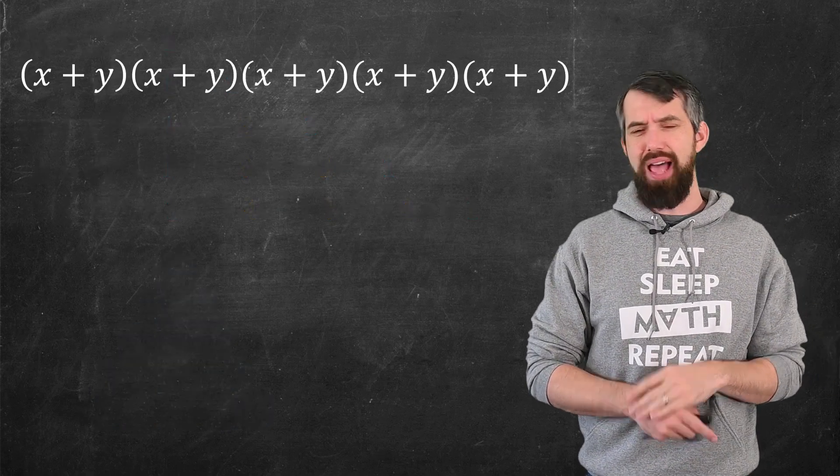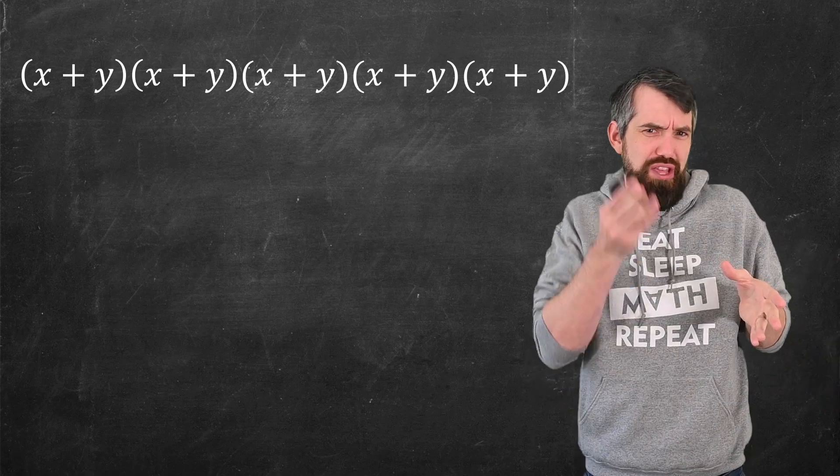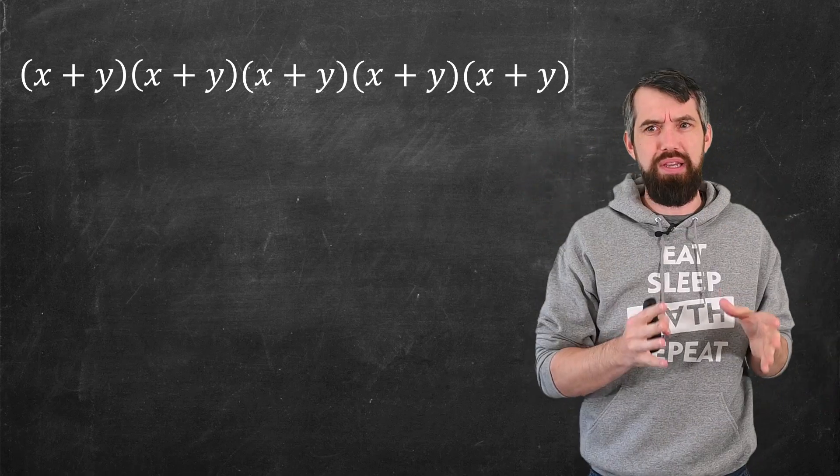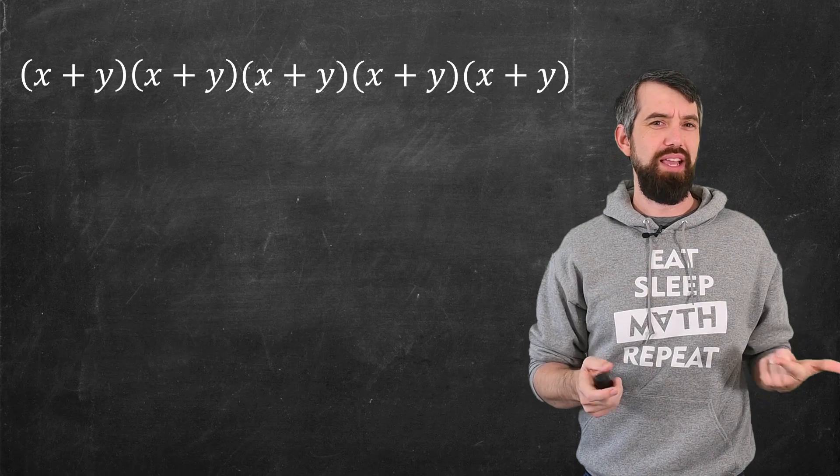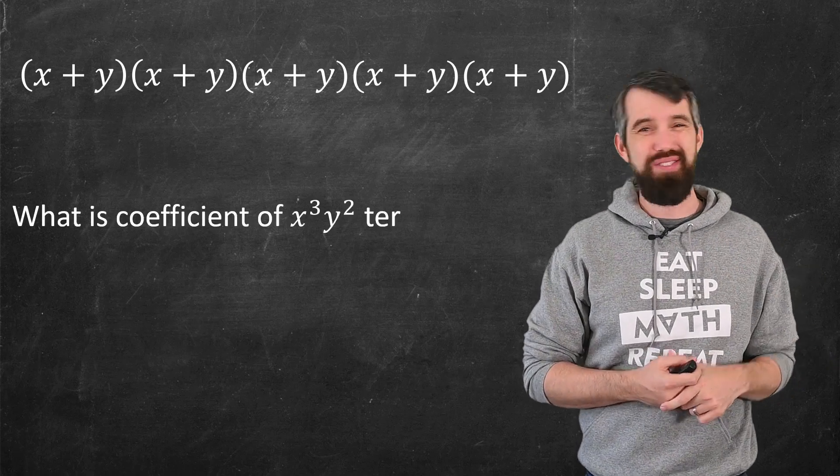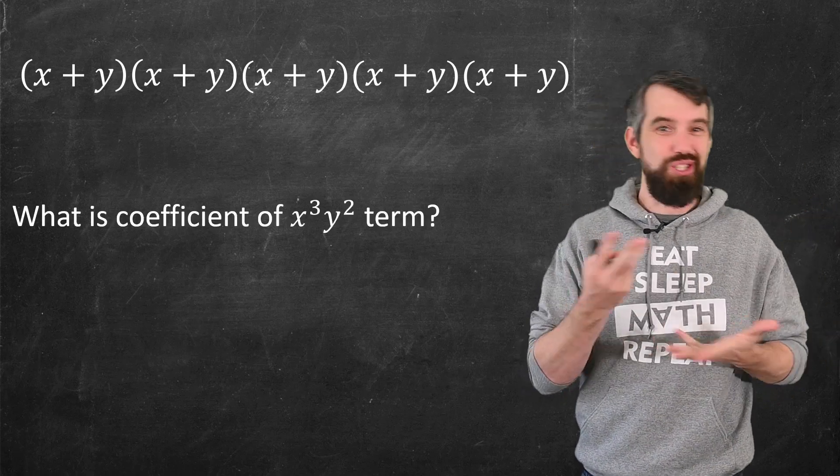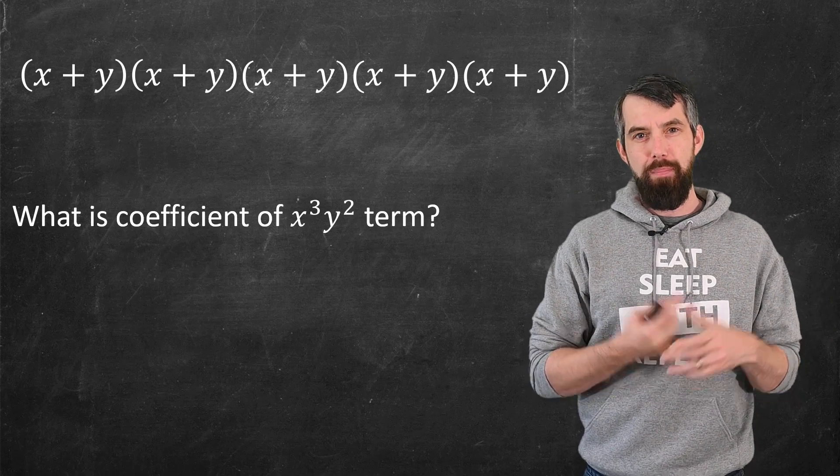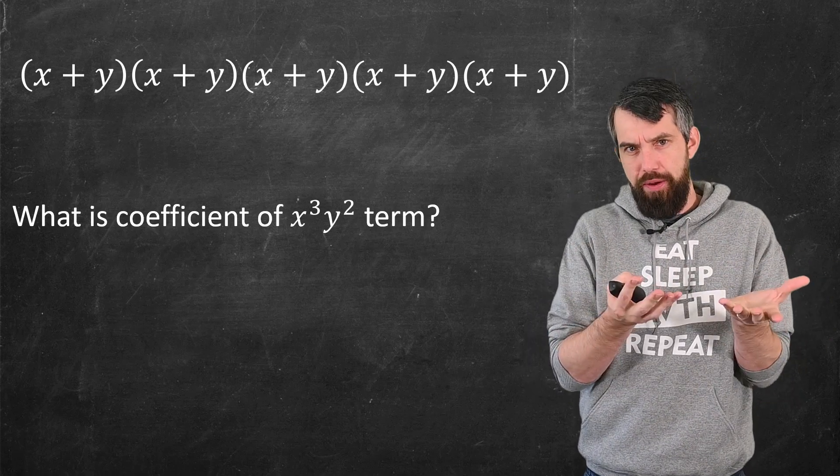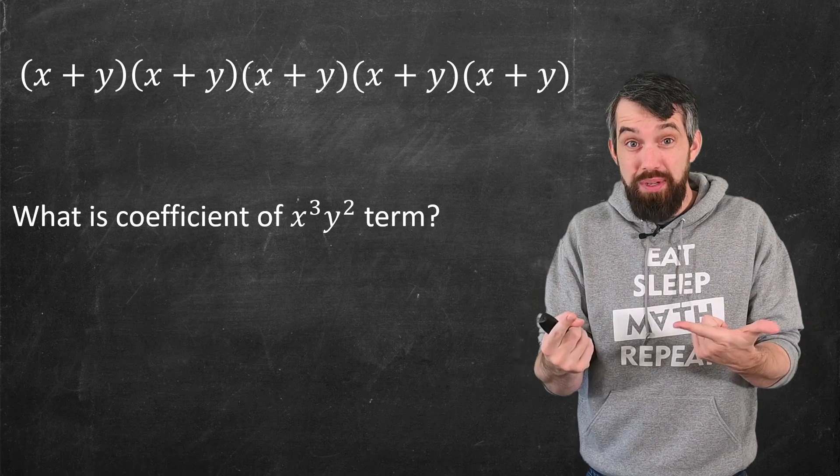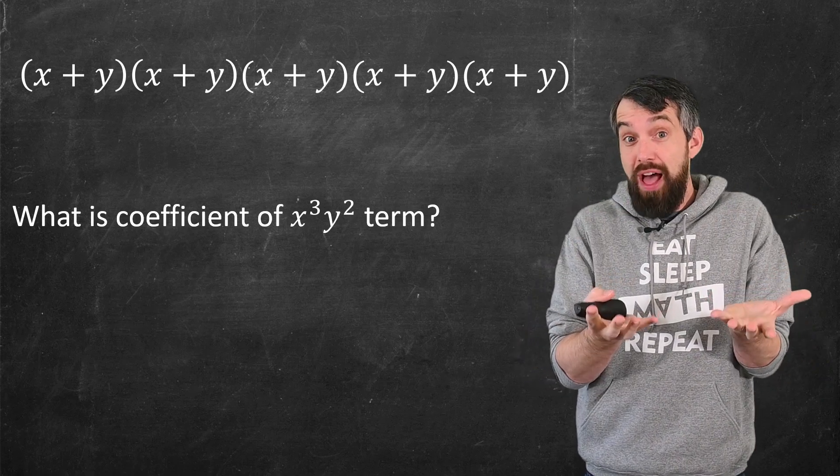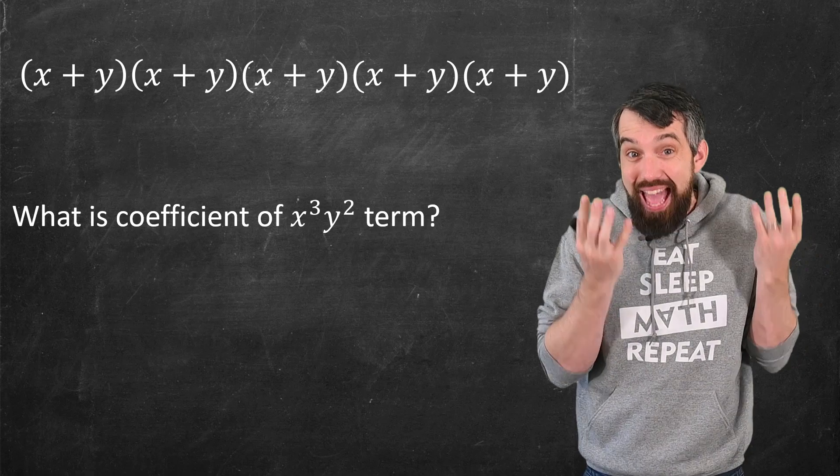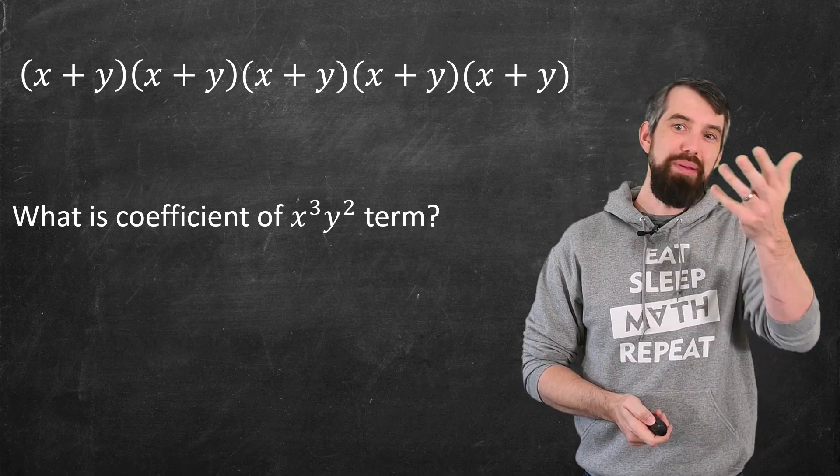So what I want to do is, I'm going to do x plus y to the 5th, so I put up 5 copies of x plus y. I'm trying to think, like, what would be the coefficient of, say, I don't know, the x cubed y squared term, or any other term that you so chose? Well, by distributivity, I'm multiplying all these factors together. And basically, if it's going to be x cubed, you'll have had to choose from those 5 factors, you'll have had to choose the x three times.